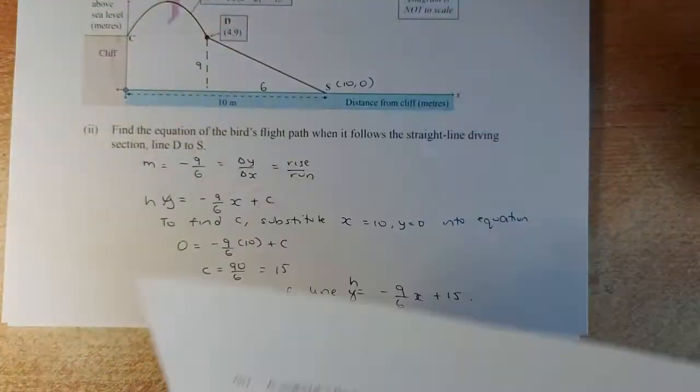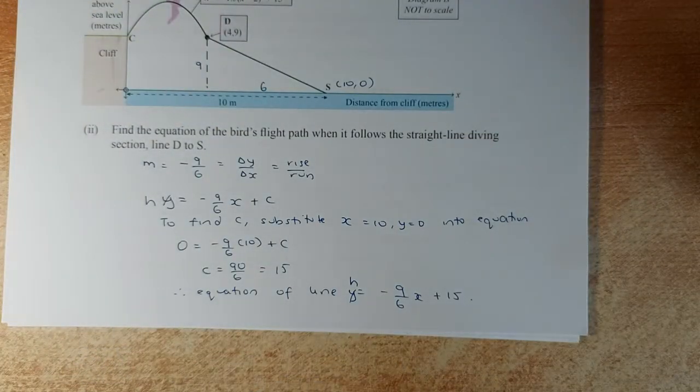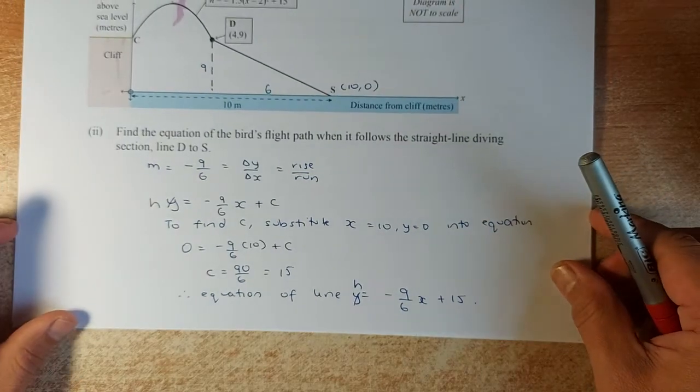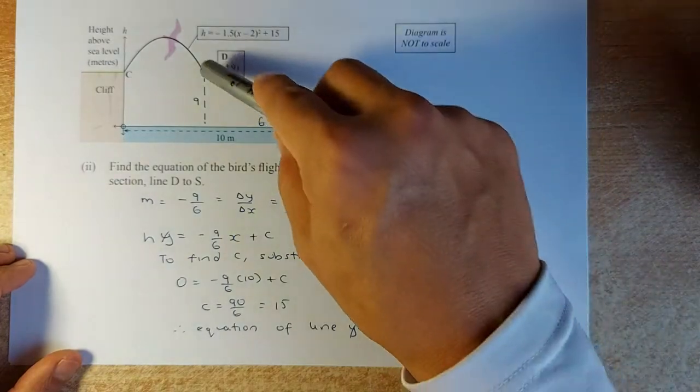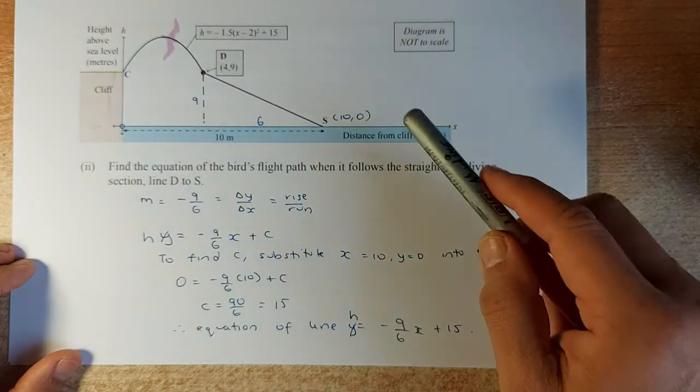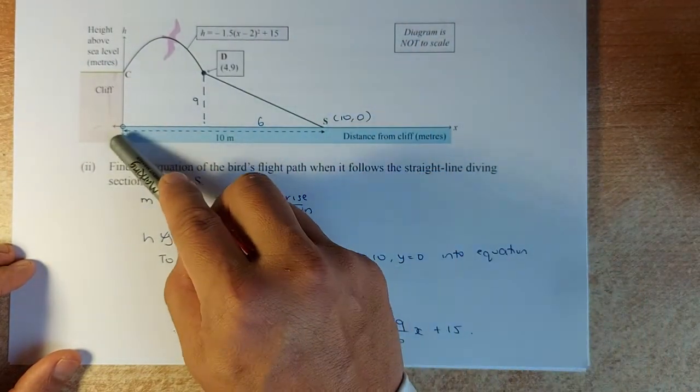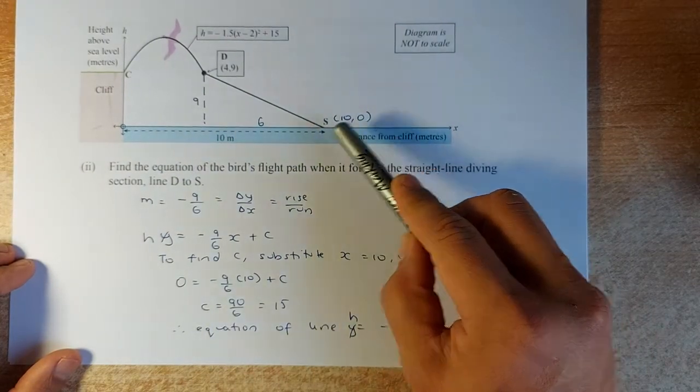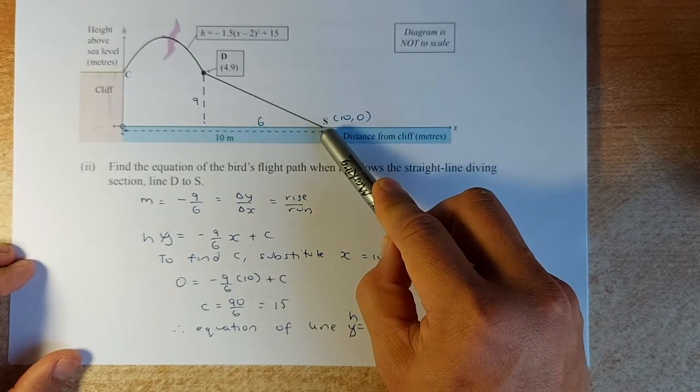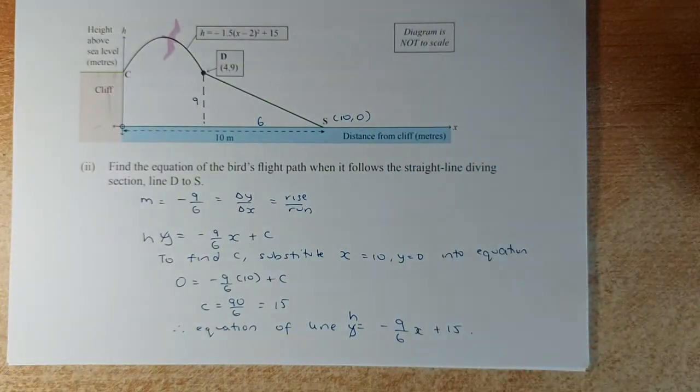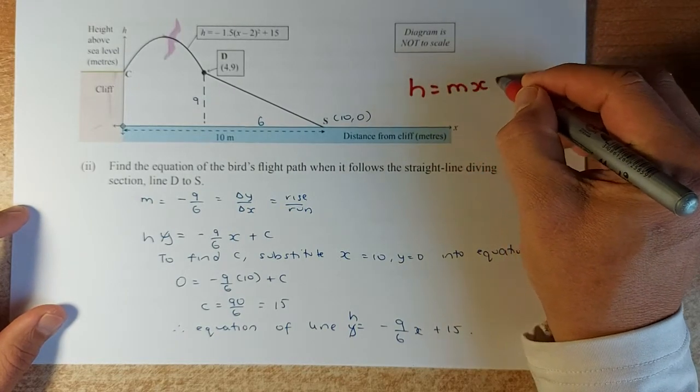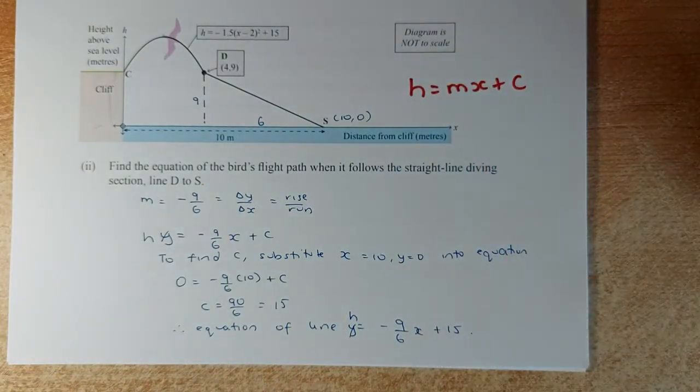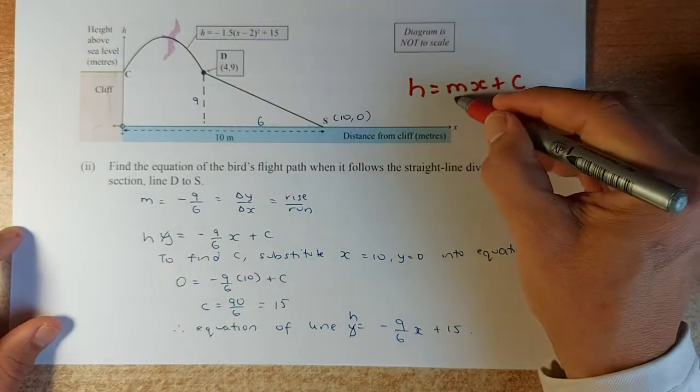Now we shall do the next question. The next question asks you to find the equation of the bird's path when it follows the straight line from D to S. As we said before, S is 10, 0 because the length is 10 and the height is 0. So first thing, the equation is going to be y or h equals mx plus c. Now we need to find m and then find c.